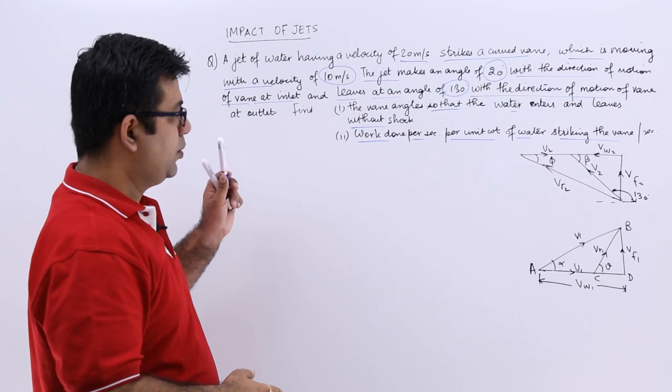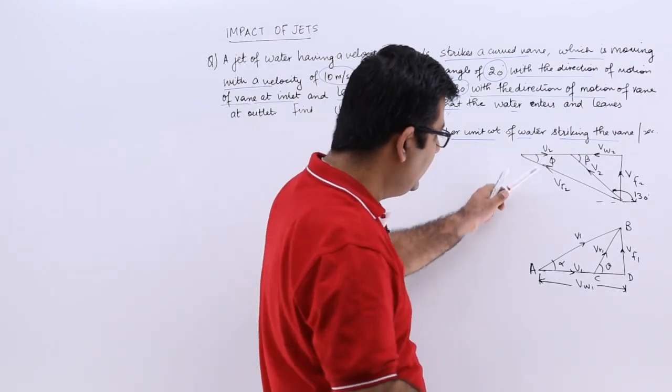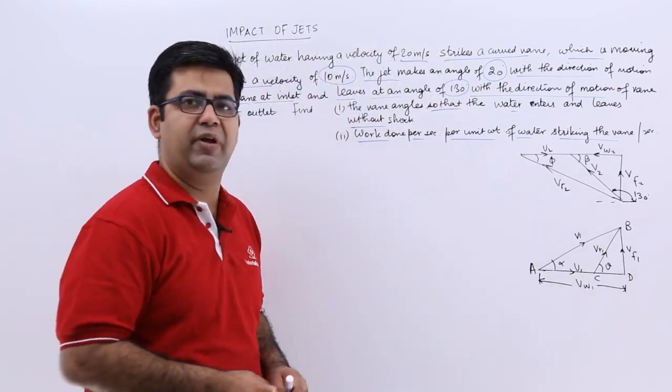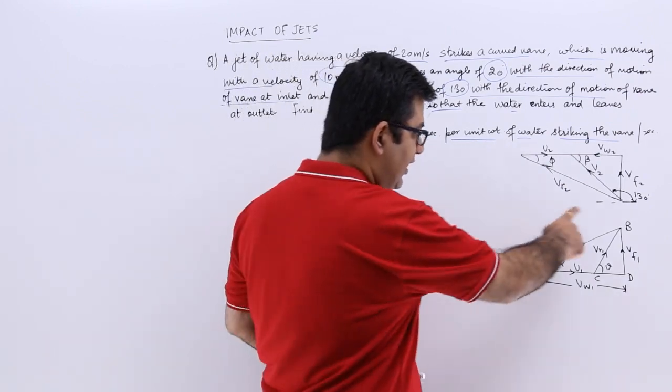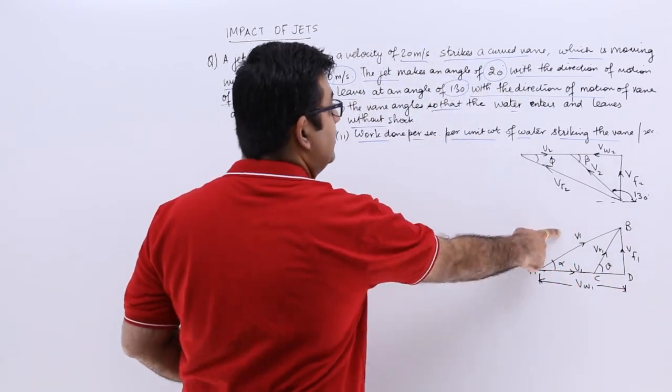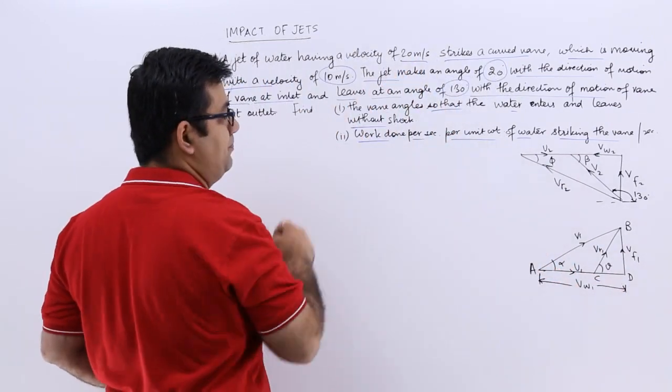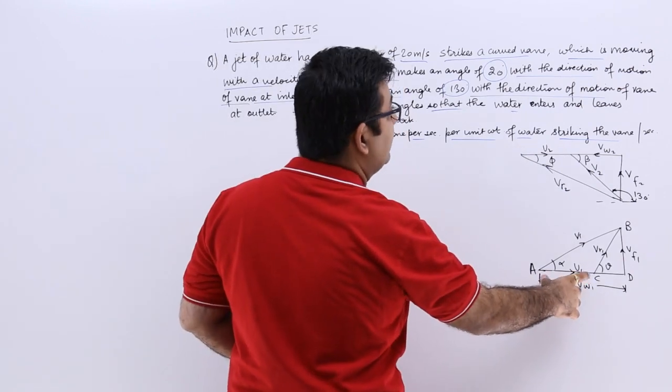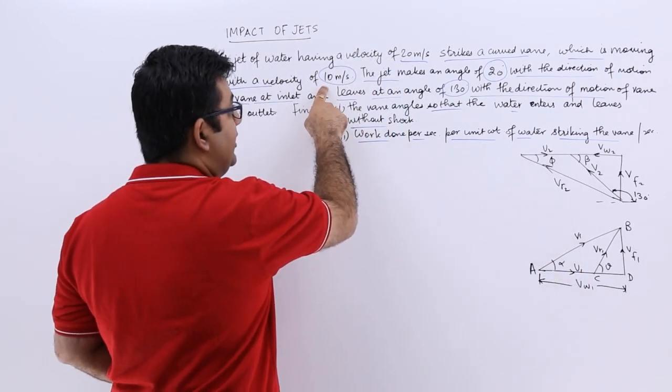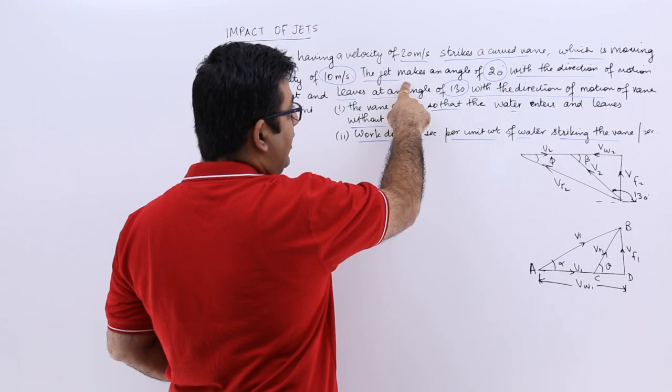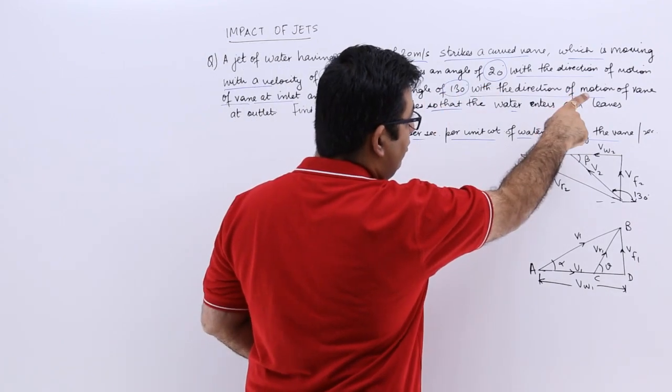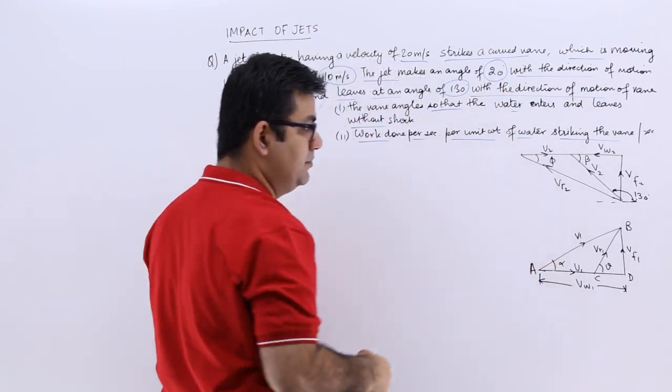For this question I have already made the inlet and outlet velocity triangles. If you look at the inlet velocity triangle, V1 is given to you as 20, U1 is given to you as 10, and the angle of the jet with the direction of motion is 20, so alpha becomes 20.